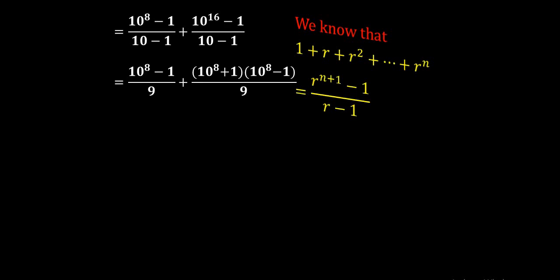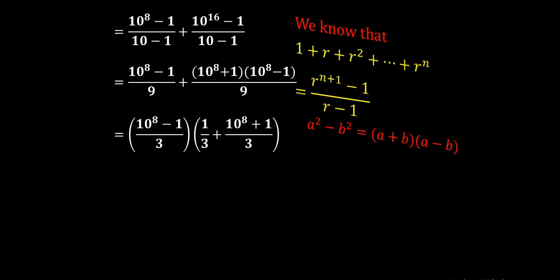The first term remains unchanged. The second term (10¹⁶ minus 1) can be factored as (10⁸ plus 1)(10⁸ minus 1), with denominator 9, using the formula a² minus b² equals (a plus b)(a minus b). Now if we take (10⁸ minus 1) divided by 9 as a common factor from both terms: in the first term, 1/3 remains, and in the second term, (10⁸ plus 1)/3 remains.